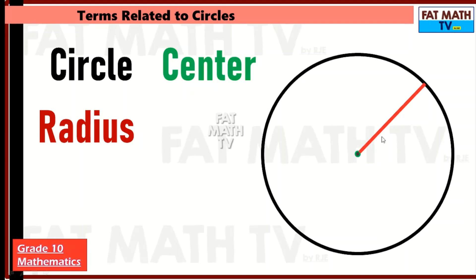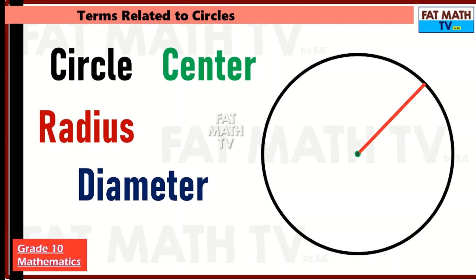So when we say radius, it can be the line segment or its length. And the diameter of the circle is the line segment joining two points on the circle that passes through the center of the circle. It's equal to two times the radius — this is R and this is another R — so the diameter is twice as long as the radius.